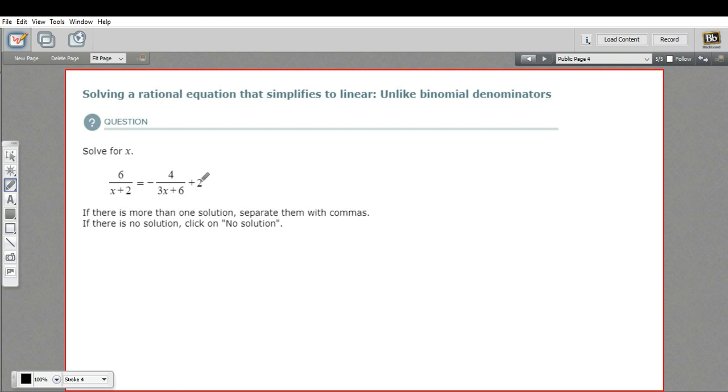The first thing to do is to check and see if there are any excluded values. The idea here is that the denominators can't be zero. You can't divide by zero. So if I put in a negative two here, this would come out to zero.